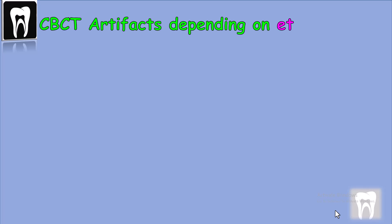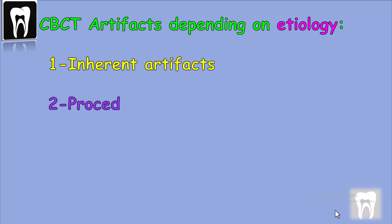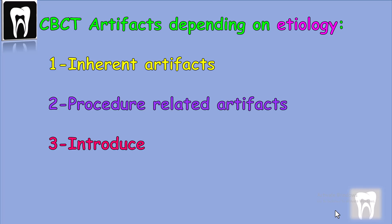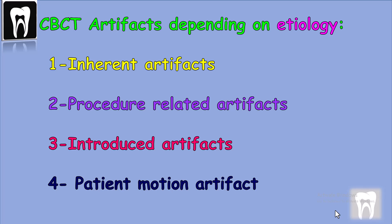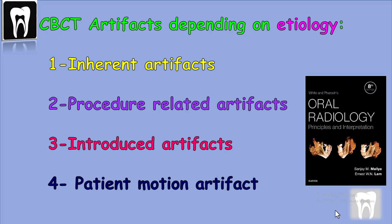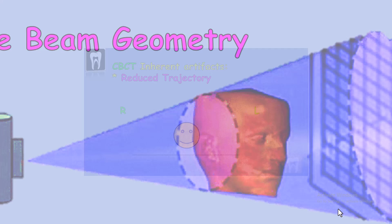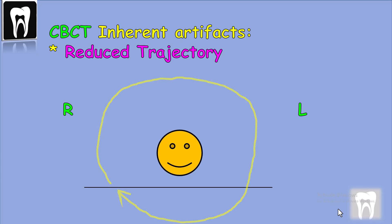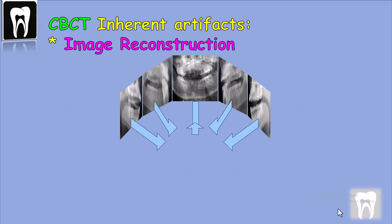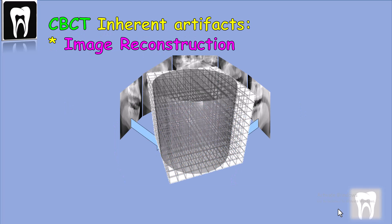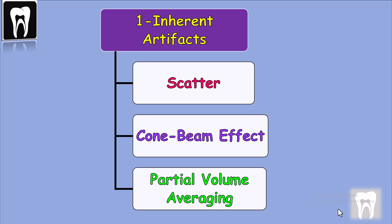Image artifacts in CBCT can be classified according to their etiology: inherent artifacts, procedure-related introduced artifacts, and patient motion artifacts. Today's classification is based on the book by White and Pharoah, Oral Radiology: Principles and Interpretation. Inherent artifacts arise from limitations in physical processes due to the geometry of the x-ray beam, which is cone-shaped, the reduced trajectory rotational arc, and the image reconstruction method of the software.